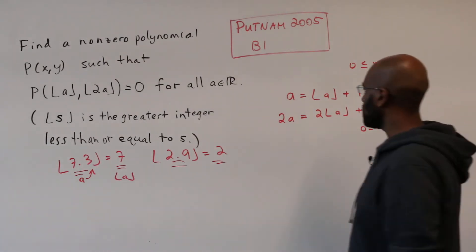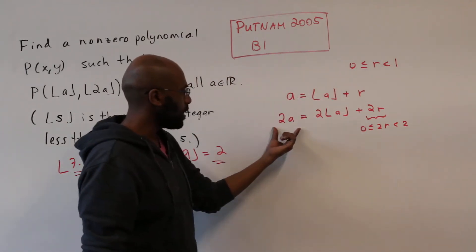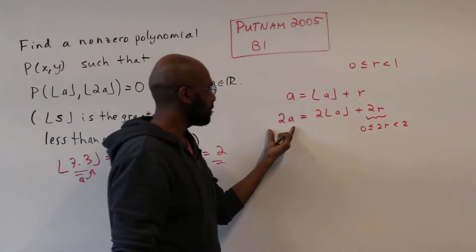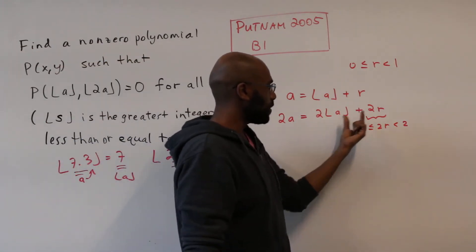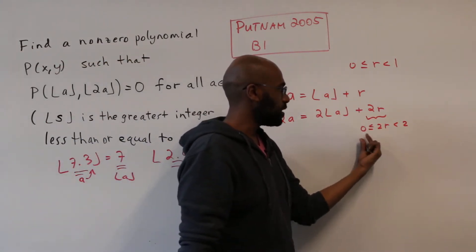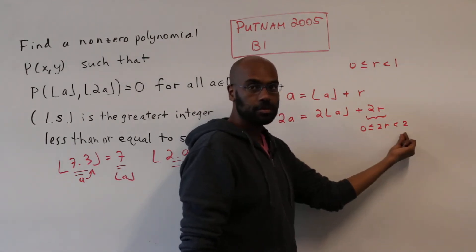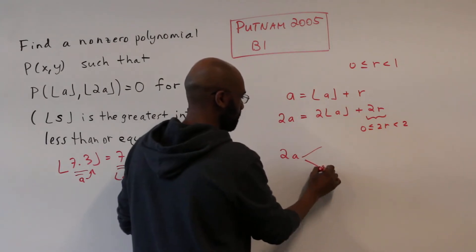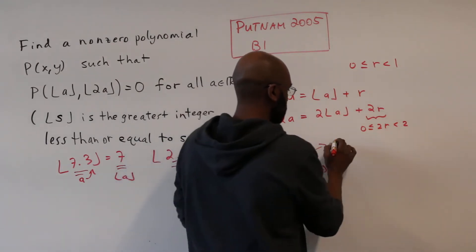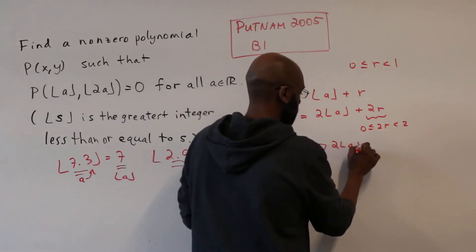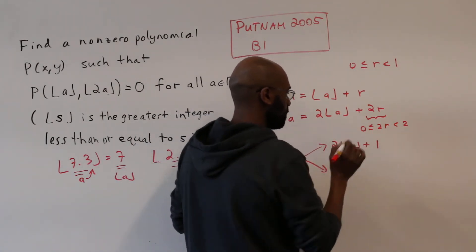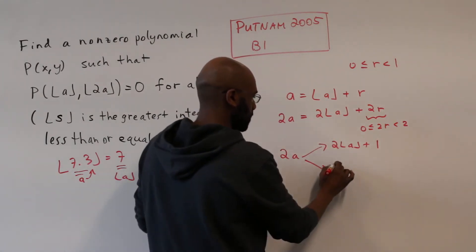So what does that tell us? Well, if you look at the number 2a and ask what is the greatest integer less than or equal to 2a? Well, 2a is an integer plus some quantity that's strictly between 0 and 2. So that means that 2a is either this quantity, which is an integer plus 1, or equal to this particular quantity here.